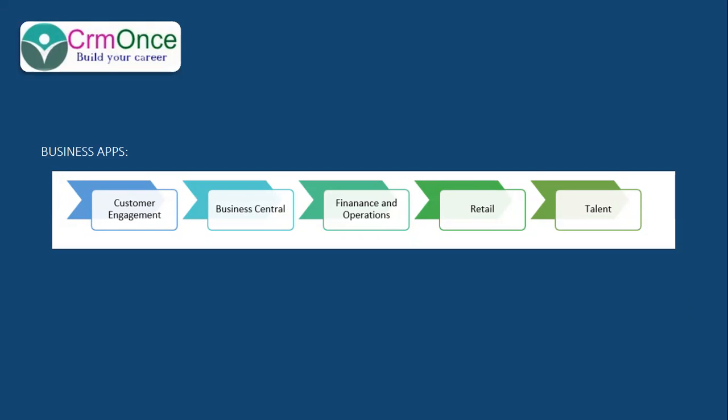Business Central is essentially Dynamics Navision. In the older versions we had Navision, and the models from Navision have been brought into CRM online as Dynamics Business Central. Finance and Operations is essentially Axapta — the models from Axapta have been brought into Dynamics 365 online as Finance and Operations.